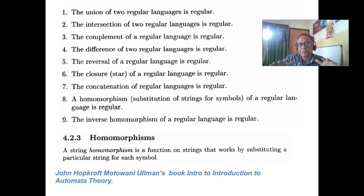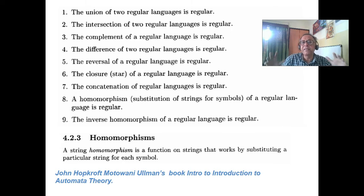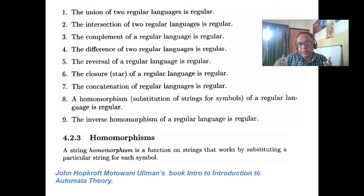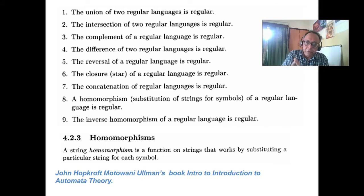In context-free, you know it is O(n³) — where n is the number of terminals, O(n³). But by various techniques we can make it O(n), otherwise you cannot write programs. If your program takes n³ time, it is illogical. So all our programming languages are deterministic context-free, and I have repeatedly told you it must have an unambiguous grammar.